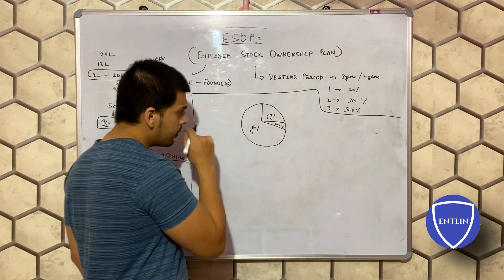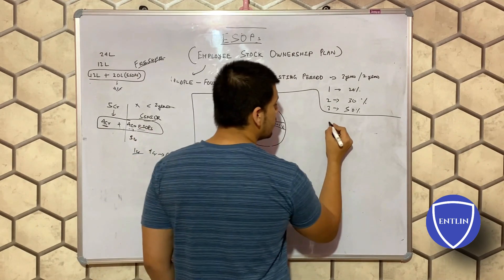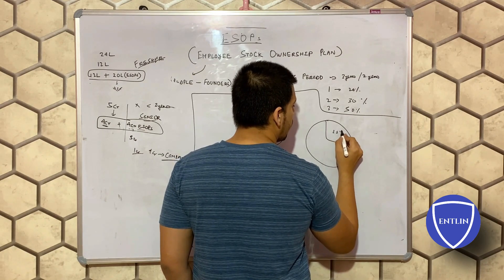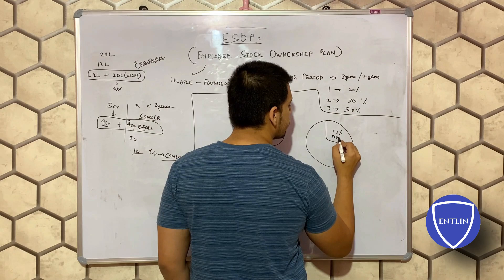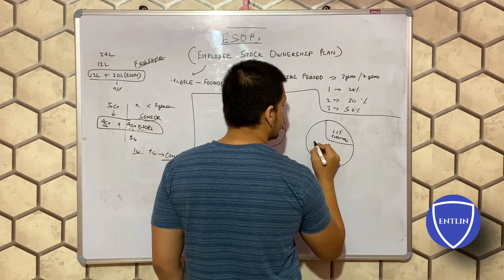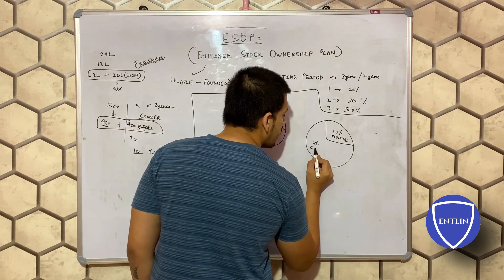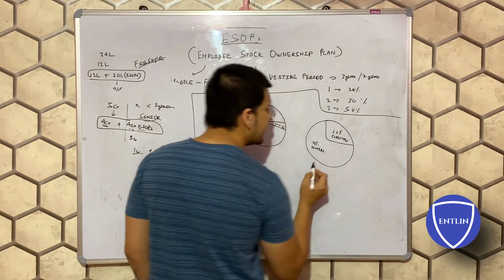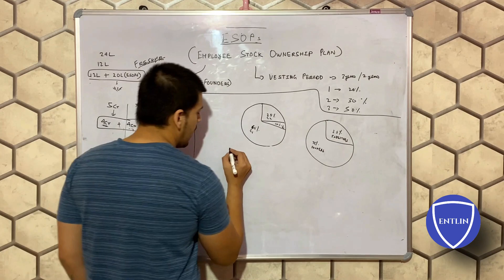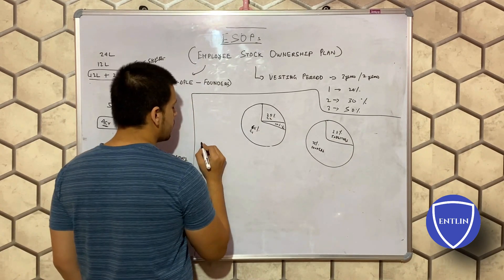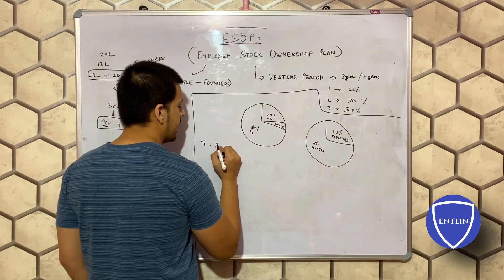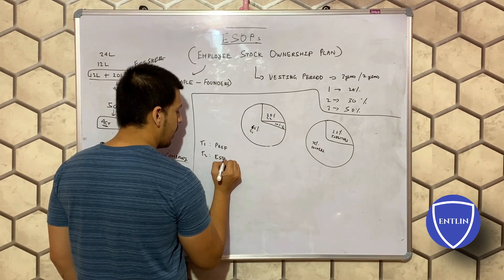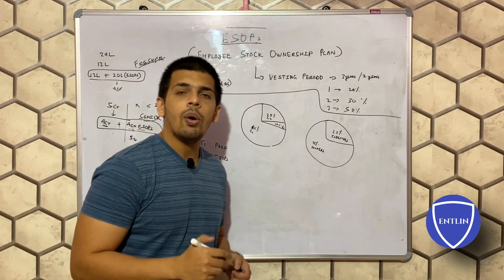As your company grows big, your structure might look like 25% held by investors and 75% held by founders. Now a company has different types of shares. Type 1 are preferential shares and Type 2 are ESOPs. Certain company decisions require agreement of all shareholders - for example, if you want to make a deal with an investor, all shareholders have to sign and agree, otherwise that deal cannot go through.